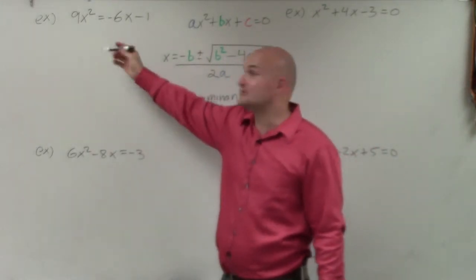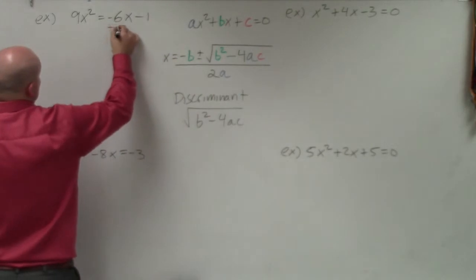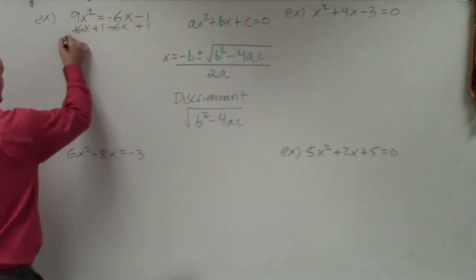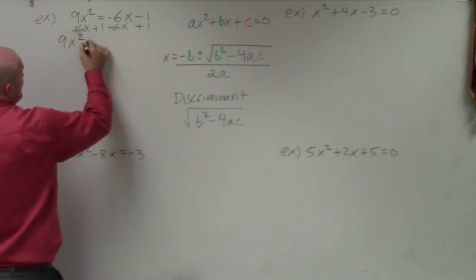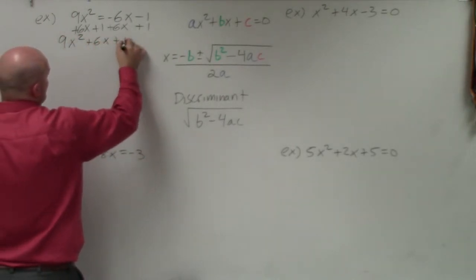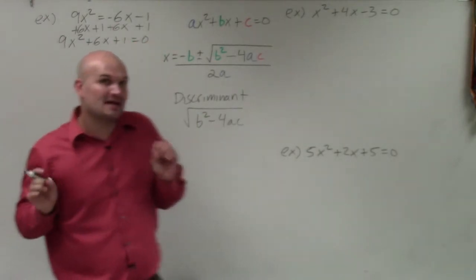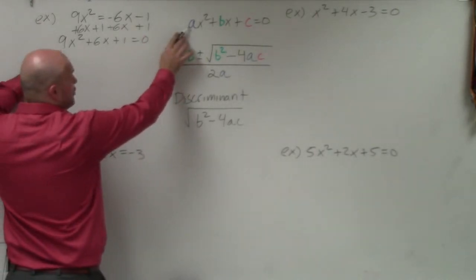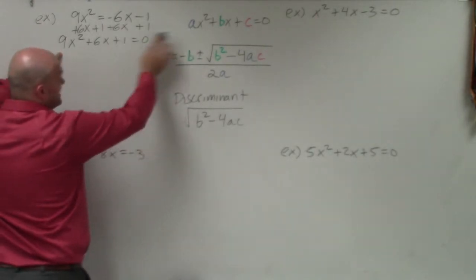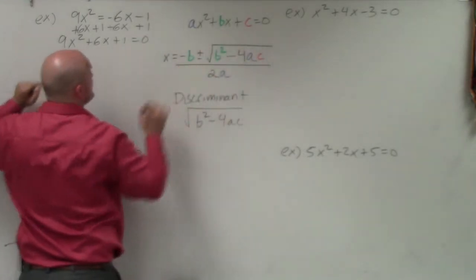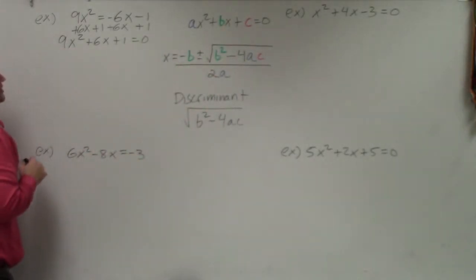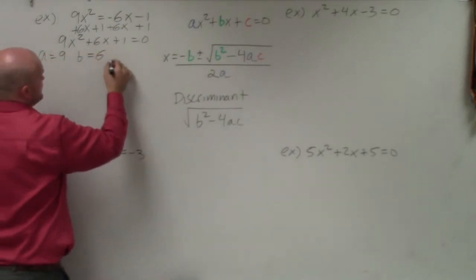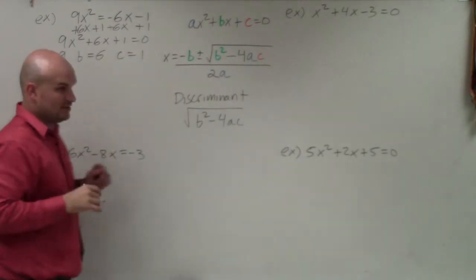For this example, you can see it's not set equal to 0. So the first thing we're going to do is add 6x to both sides and add 1 to both sides. Therefore, I have the equation 9x² + 6x + 1 = 0. Then I identify a, b, and c: a is the coefficient of your quadratic term, b is the coefficient of your linear term, and c is your constant. So a = 9, b = 6, and c = 1.